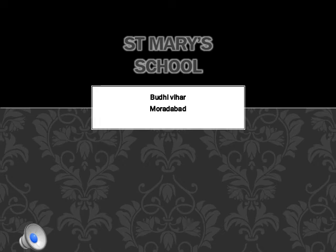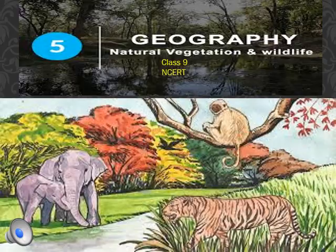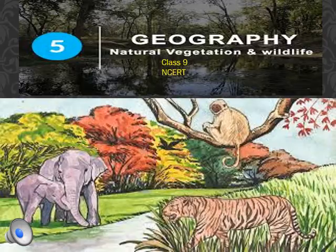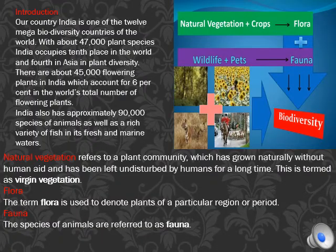Hello students, this is Taranum Jahan and I'm here again to start up a new chapter from your geography. So let's begin Chapter 5 by the name Natural Vegetation and Wildlife, for Class 9. The book we are following is NCERT. Let's start with the introduction of natural vegetation and wildlife.